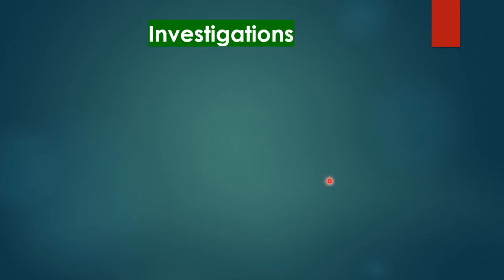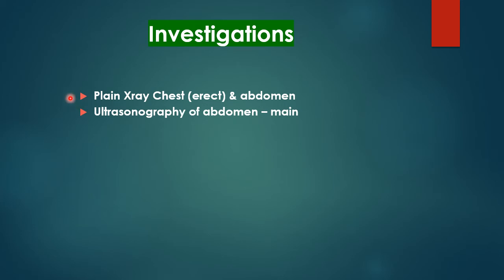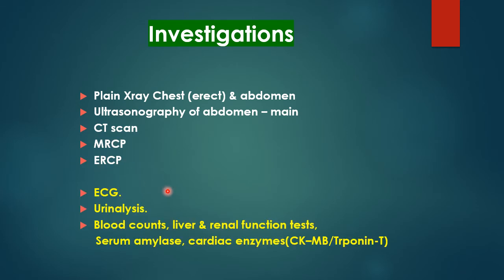Investigations for acute cholecystitis: first, plain X-ray of the abdomen (erect chest and abdomen) together with ultrasonograph of the abdomen — the mainstay of investigations. Then CT scan if necessary, MRCP, and ERCP. Other investigations include ECG to rule out myocardial infarction, urine analysis to exclude urinary tract infection, full blood count, liver and renal function tests, serum amylase, and cardiac enzymes including creatinine kinase and troponin T if necessary.